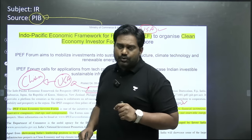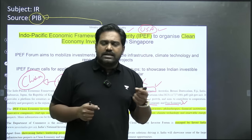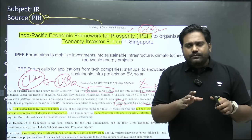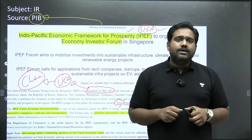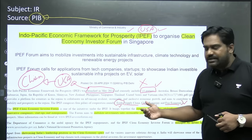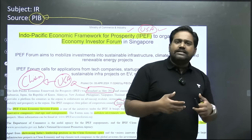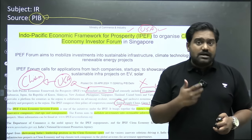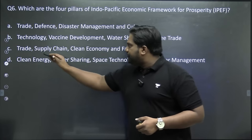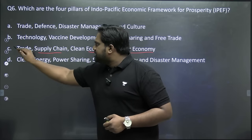India hasn't joined the trade pillar because when it comes to trade-related issues, India has major concerns when dealing with developed countries like the US, Australia, Japan, and New Zealand — similar to the issues India has at the WTO. India didn't want adverse impact on domestic industry. But India is party to the other three pillars: supply chain resilience, clean economy, and fair economy. Under this initiative, member countries organized a clean economy investor forum in Singapore. The four pillars of IPEF are trade, supply chain, clean economy, and fair economy — the correct answer is option C.